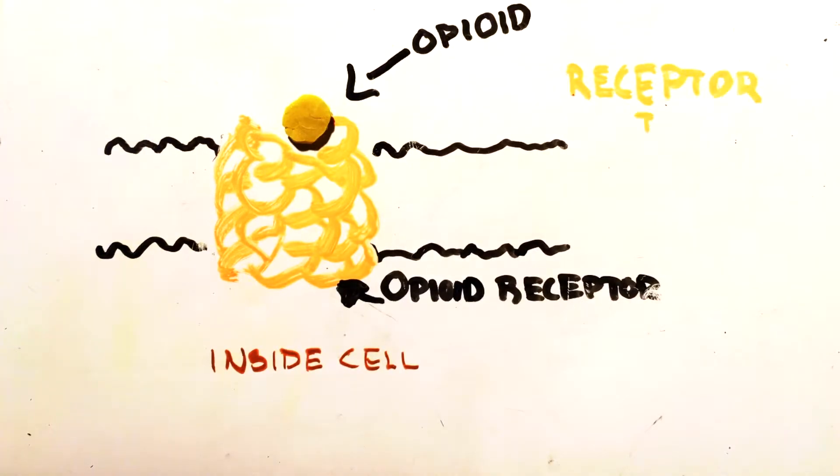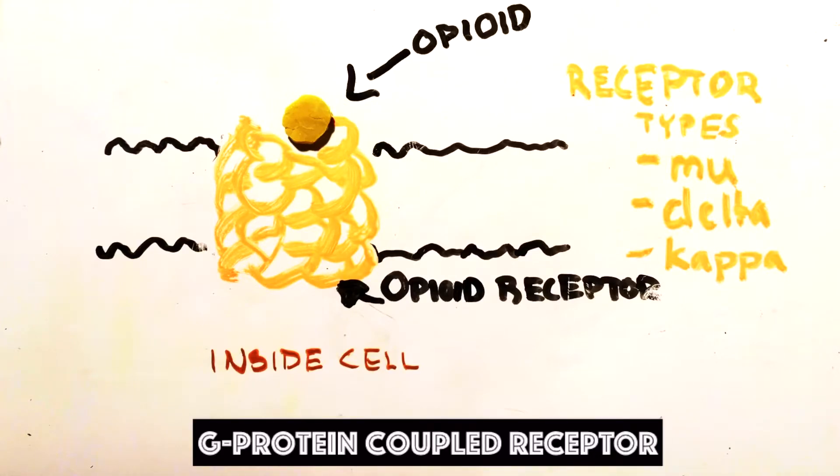There are three opioid receptors to which they bind: mu, delta, and kappa receptors. They are all part of a group of receptors called G protein coupled receptors or GPCR. Let's view a model of this.